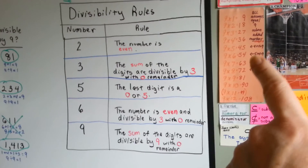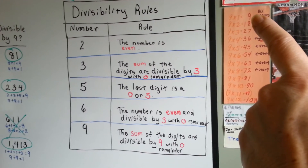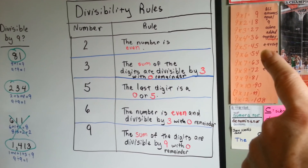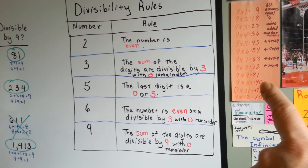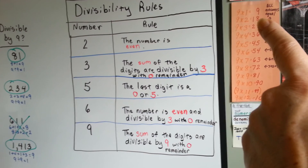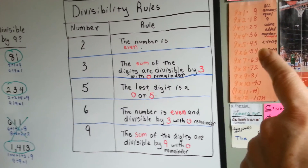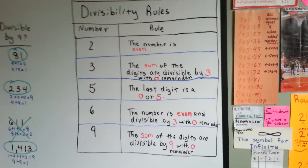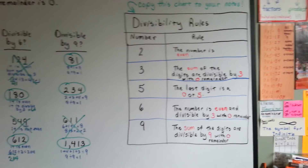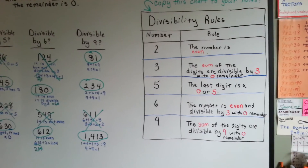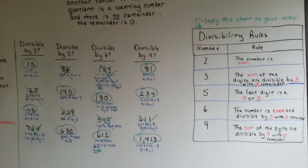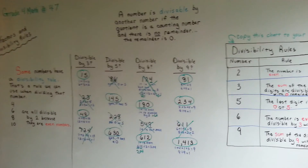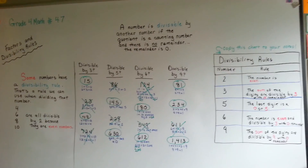And look at how the numbers go in the ones place: 9, 8, 7, 6, 5, 4, 3, 2, 1, 0. And in the tens place they go 1, 2, 3, 4, 5, 6, 7, 8, 9. Isn't the 9 times table weird? I hope you have enough time to have written down the divisibility rules. We're going to continue talking about factors and multiples, and I'll see you in the next video. Bye!